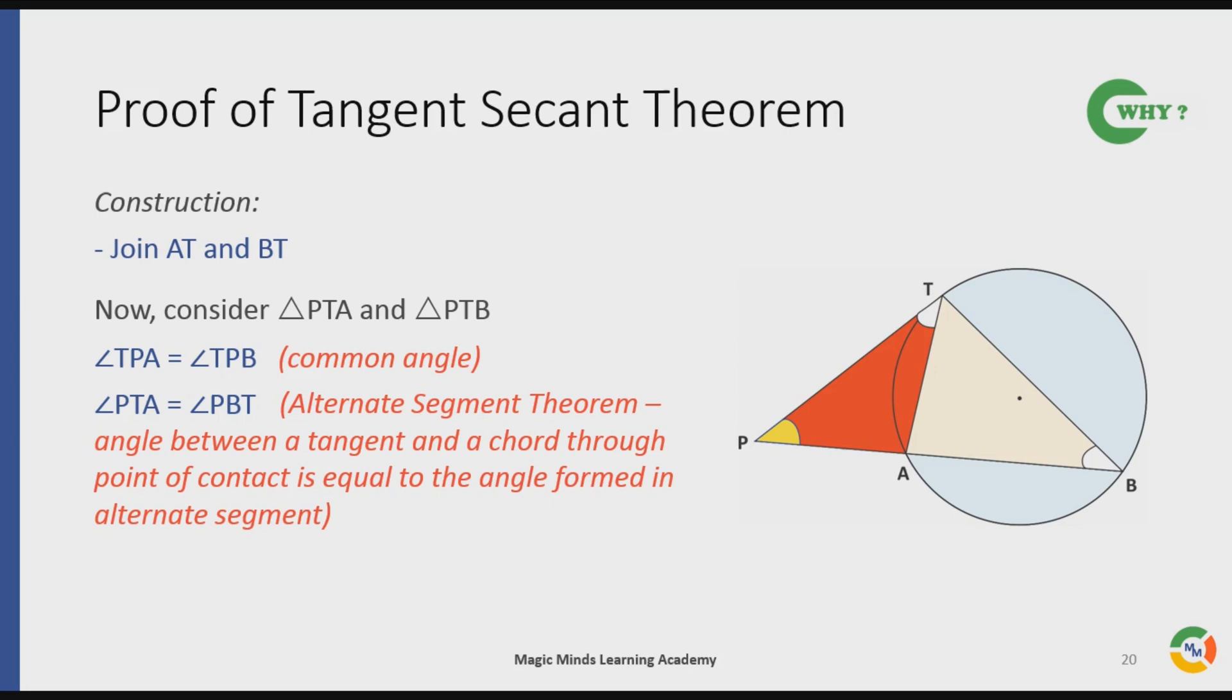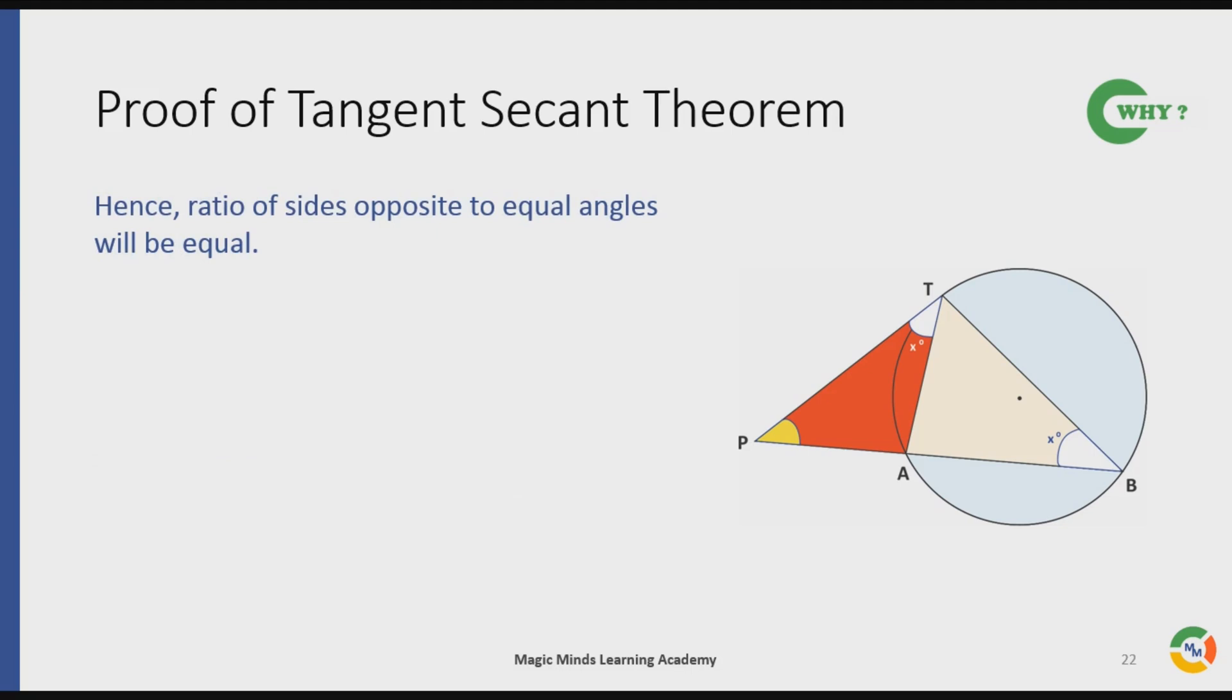Moving forward, since two of the angles in these two triangles are equal, therefore triangle PTA is similar to triangle PTB. Hence, the ratio of sides opposite to equal angles will be equal. This means PT/PA equals PB/PT.